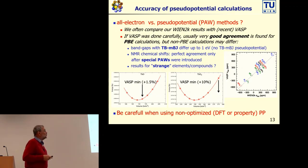Okay, so this brings me now to one slide where I want to compare the accuracy of pseudopotential calculations with our Wien2k results. We quite often compare our results with VASP results, mainly simply because the majority of calculations you can find in literature are done with VASP. And I have to admit, if I like it or not, it is a fact. If VASP is done carefully, usually very good agreement between VASP and Wien2k calculations is found, at least for PBE type calculations.